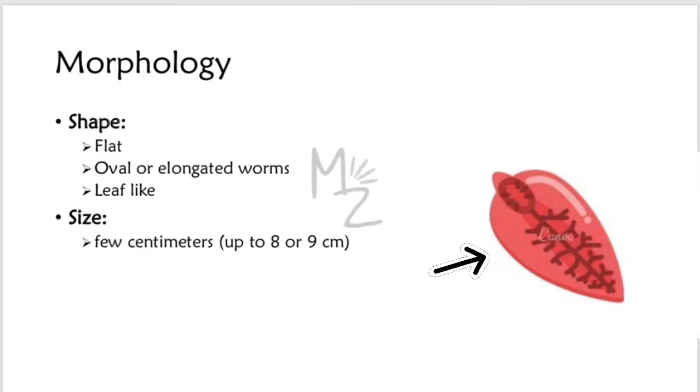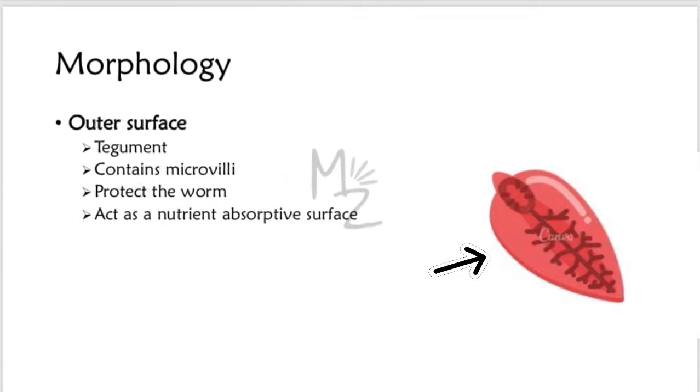Size: they vary in centimeters from about 8 or 9 centimeters. Outer surface of trematodes is called tegument that contains microvilli, which helps protect the worm, which acts as a nutrient-absorptive surface.